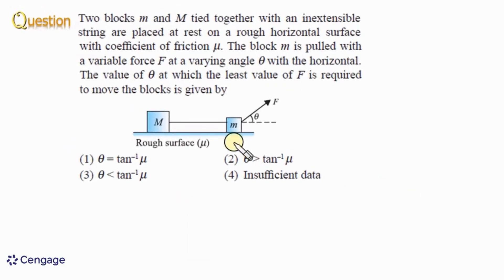In this question, two blocks capital M and small m are connected together with a light inextensible string placed on a rough horizontal surface with coefficient of friction μ. The small m block is acted upon by a force capital F at angle θ with the horizontal. Both F and θ are variable, and we need to find the value of θ for which the least value of F is required to move the blocks.